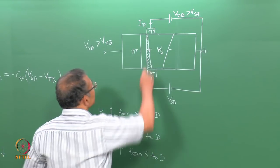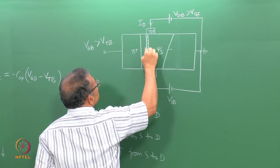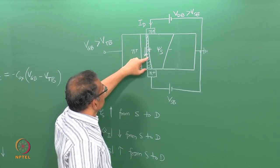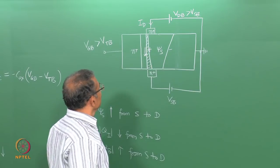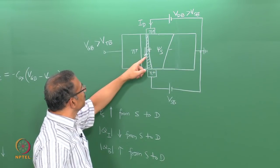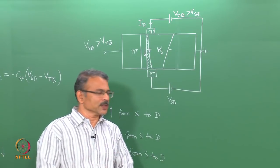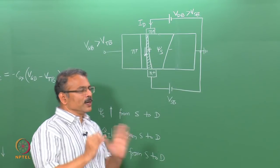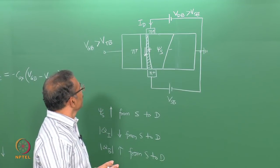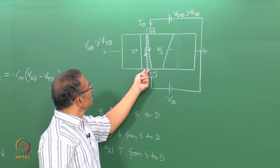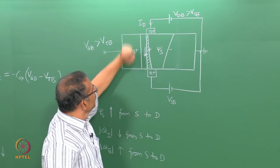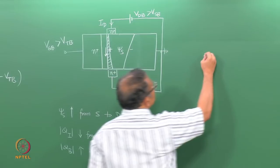There is drift because there is an electric field directed from drain to source. There is also diffusion because the inversion layer charge goes on decreasing from source to drain, creating a tendency for diffusion of electrons from source to drain. To understand what is happening in the device, we can concentrate on the drift part and say this is like current flow through a resistor whose cross-sectional area is going on reducing as you move from source to drain.